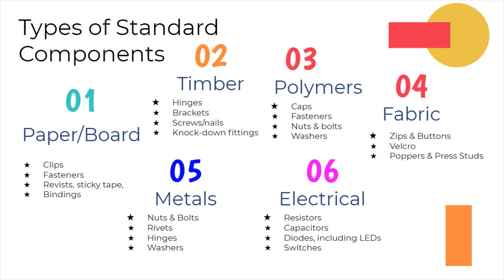Standard components used with polymers include caps, fasteners, nuts, bolts and washers. Standard components used in fabric and textile-based products include zips, buttons, poppers and press studs, velcro, and decorative items such as embroidered decals, sequins and beads.